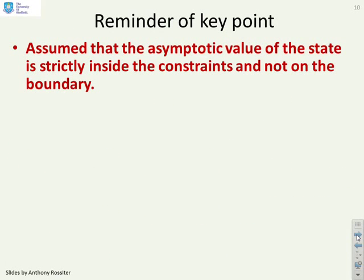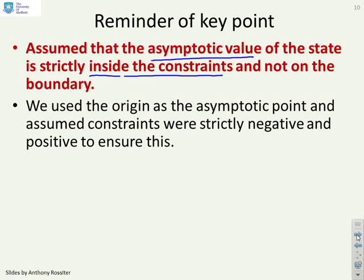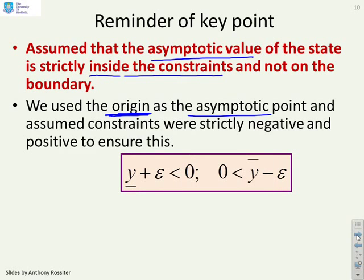So what's the key points? We assumed that the asymptotic value of the state was strictly inside the constraints and not on the boundary. And that's quite important, because if you put it on the boundary, you won't necessarily converge. We used the origin for simplicity. That's what we're doing here. We're using the origin as the asymptotic point.